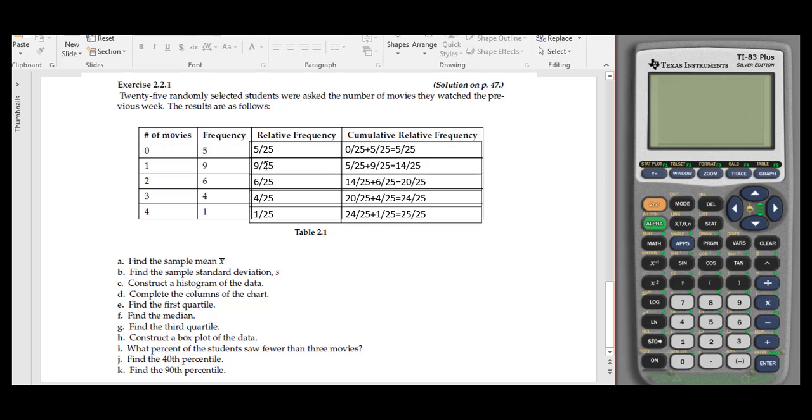For the next one, we add 9 over 25 plus the previous cumulative relative frequency, which gives us 14 over 25. Then for 2 or less movies, 14 over 25 plus 6 over 25. Then 20 over 25 plus 4 over 25. And finally, 24 over 25 plus 1 over 25.